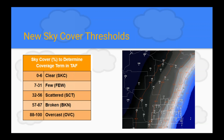For the sky cover threshold, this was changed on a national level. Now all of the country will be using the sky cover percentage to determine sky clear, few, scattered, broken, or overcast in your TAF. As an office, you can update your color schemes for sky cover so that when forecasters are making sky grids, you'll know what type of coverage you'll be getting in your TAF formatter.